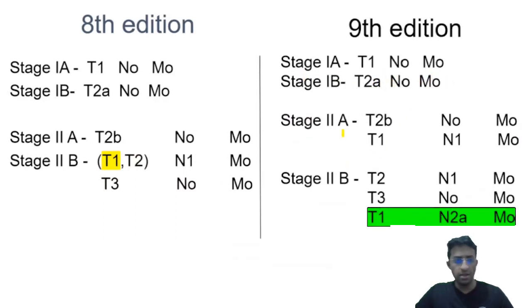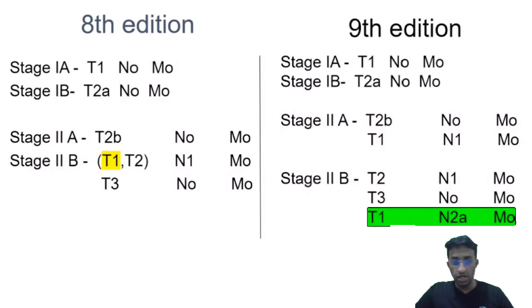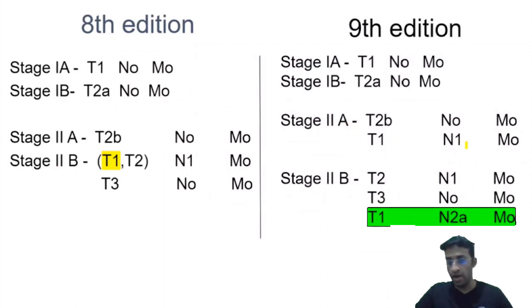Stage 2A: T2B, N0, M0 comes under stage 2A. The change here is that T1, N1, M0, which was initially stage 2B, is now in stage 2A.